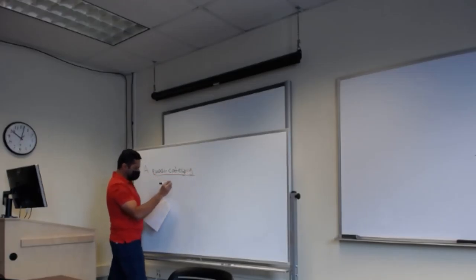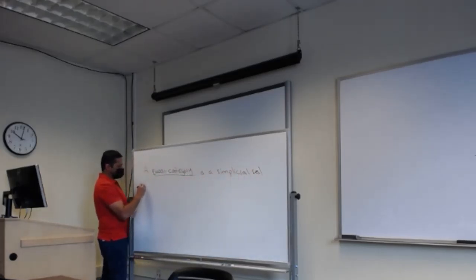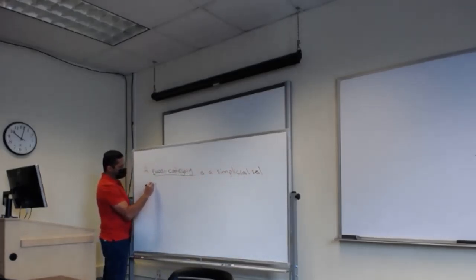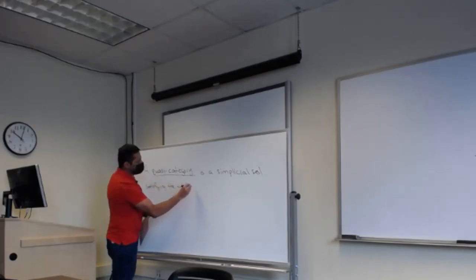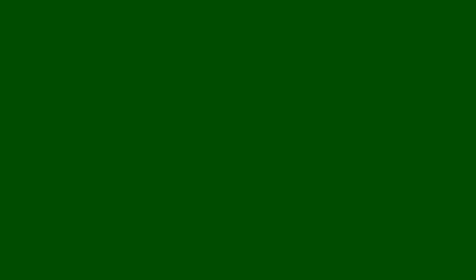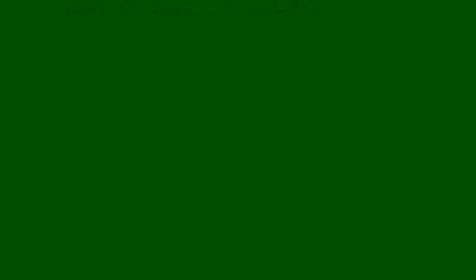So let me put up the definition of a quasi-category, and then we'll go ahead of it. A quasi-category is a simplicial set satisfying the weak Kan condition. So Amari and Luke told us what a simplicial set is, and today I want to focus on the second part, the weak Kan condition.